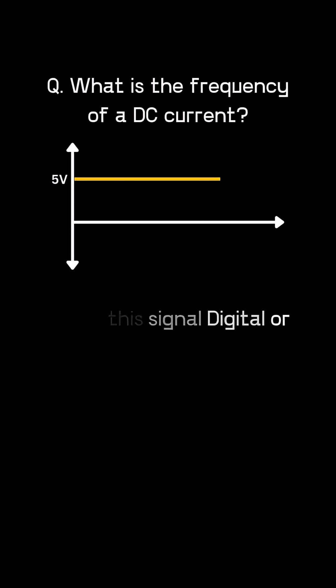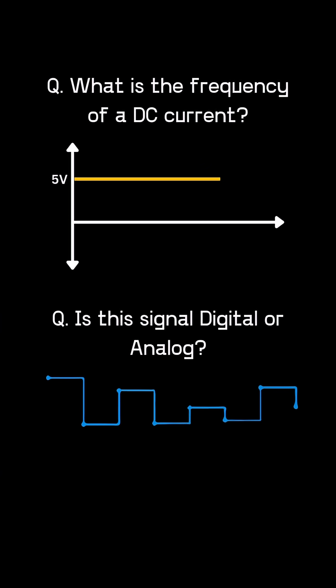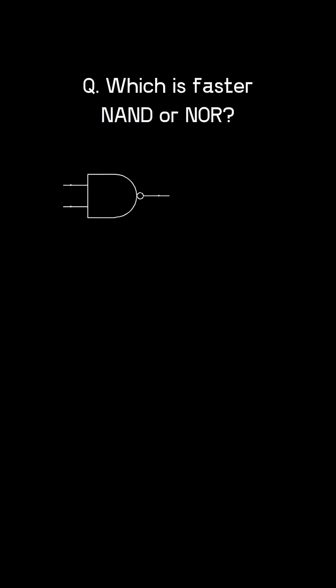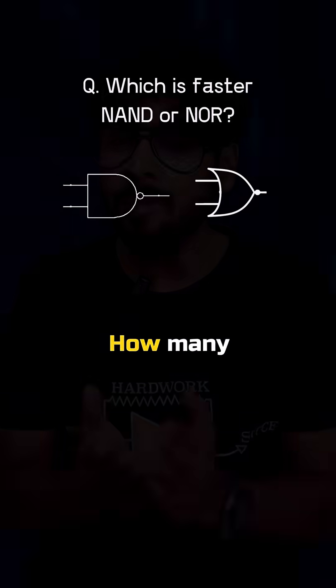Let's test your basics here itself. What is the frequency of a DC current? Is this signal digital or analog? Why capacitor blocks DC and allows AC? Are these signals AC or DC? Which is faster, NAND or NOR? How many did you know? Be honest and let me know in the comments.